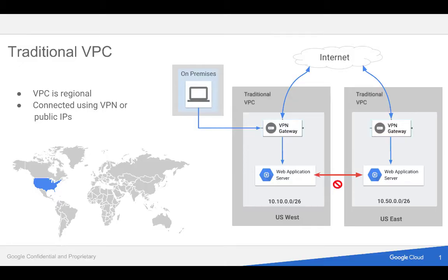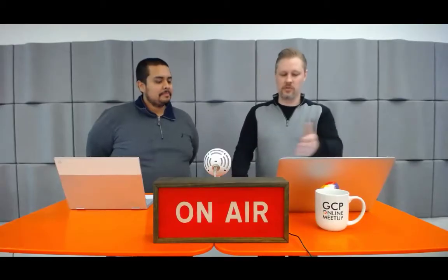I'm going to talk about the basic VPC construct that exists within the Google Cloud environment. So as you see here, this is what we call a traditional VPC construct. If you've done any work in cloud with any of the cloud providers out there, this looks very familiar. When you build a VPC, it's bound by region. In this example, I'm showing a VPC in US West and a VPC in US East, and how you connect those VPCs together — you build a VPN that connects those two VPCs.